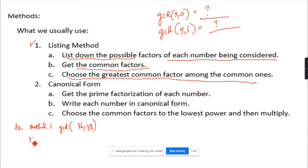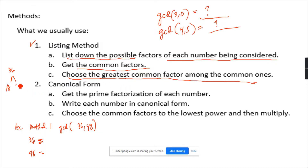Using the listing method, write down 36 and 48, then find their factors. For 36: you can use factor 2 — divide 36 by 2 to get 18. So 18 times 2. Then 18 is 9 times 2, and 9 is 3 times 3.